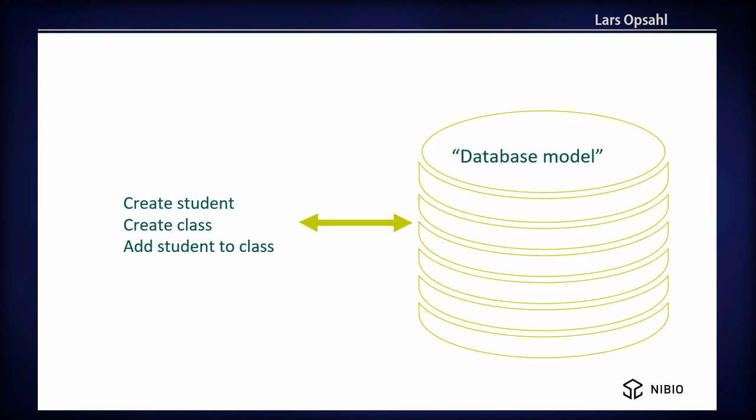That also changed the way of thinking about APIs. Now you create an API where you have a student, you have a class, and you have a relation between student and class. And you create an API, create a student, create a class, and add student by ref, and by ref both for class and student.